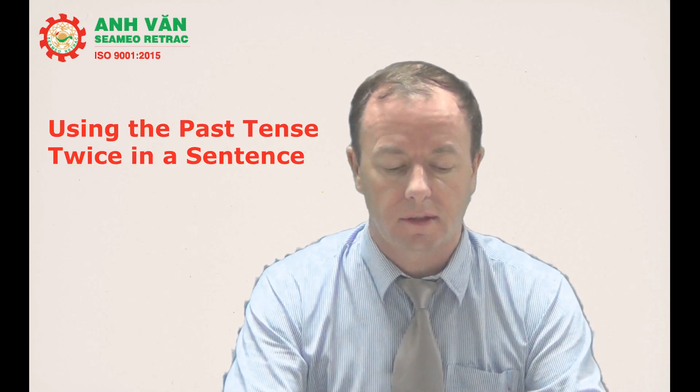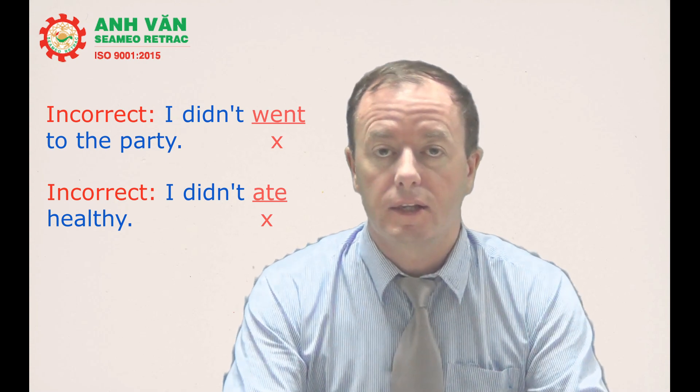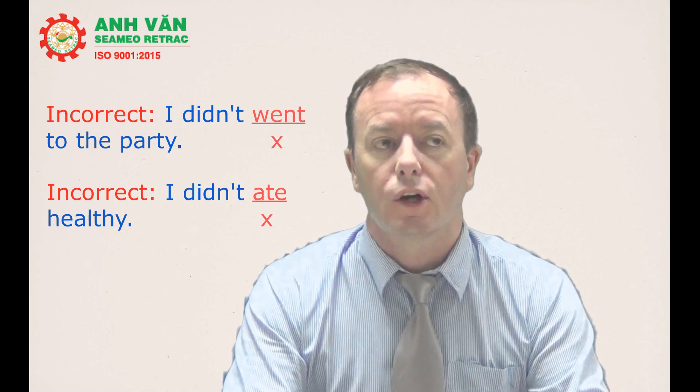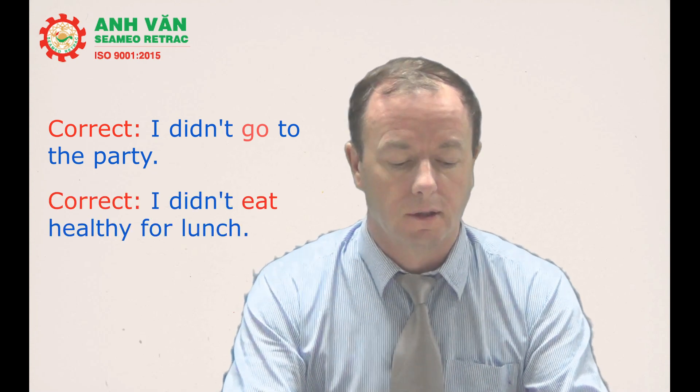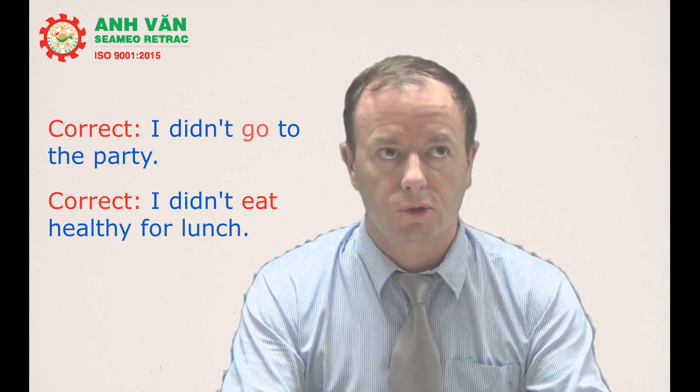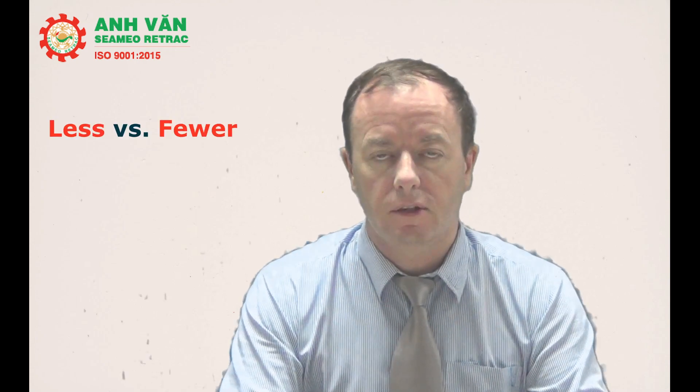The next speaking mistake is using the past tense twice in a sentence. For example: 'I didn't went to the party' or 'I didn't ate healthy' — these are very wrong. The correct way to say it is 'I didn't go to the party' or 'I didn't eat healthy.' Don't use the past tense twice in one sentence.